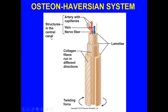In the central canal — also called the haversian canal — you're going to see arteries, veins, and nerve fibers. Around them are the lamellae, which make up the osteon. The collagen fibers run in different directions — this one going one way, the next going another way. This is very important because it provides strength and resiliency of bone tissue to handle twisting forces as well as compressive forces, because they are diffused across the different lamellae.